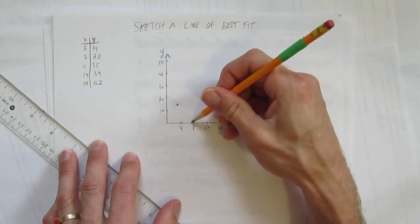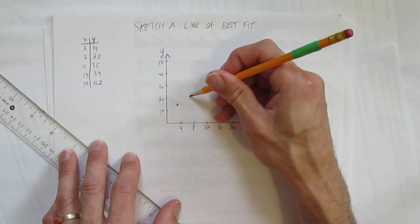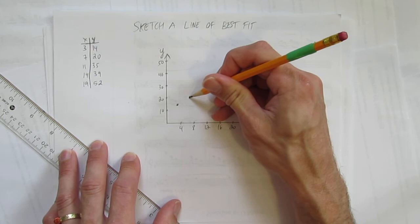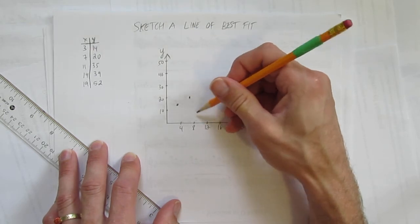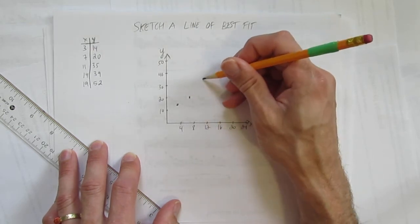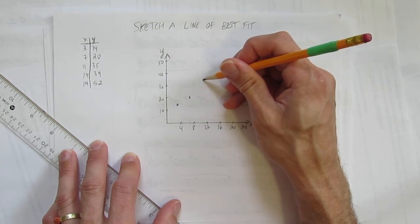So X's go out 3, go up 14, that's about there. And the next one is X of 7, Y of 20, that's about there. And then X of 11, Y of 35, that's up about there.